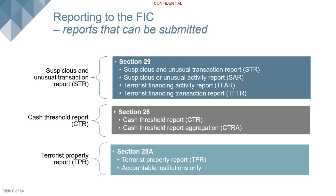We also have the terrorist property report under Section 28A — you have five days to report those. That is where you find property belonging to a terrorist, which you would identify through the UN 1267 list or the targeted financial sanctions list. Property includes not just houses or buildings but also cars or cash in your possession. For all other report types, you can continue with the transaction. However, with the terrorist property report, you are not allowed to continue — you report to the FIC and do not proceed.